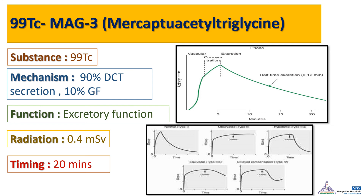In the MAG3 renal scan, technetium-99m is combined with mercaptoacetyl triglycine, of which 90% is secreted through the distal convoluted tubule and the rest filtered by the glomerulus. It measures mainly the excretory function of the kidney and takes around 20 minutes. The scan is demonstrated as a curve showing a vascular uptake phase, a concentration parenchymal phase, and then an excretory phase. Different pathologies show different curves: the normal curve is Type 1; Type 2 is the obstructed curve in which the excretory phase is really prolonged; Type 3 is the equivocal curve, where furosemide is usually used to understand the nature further; and Type 4 is a delayed excretion type.